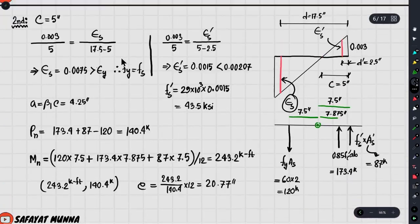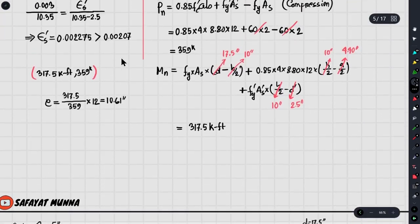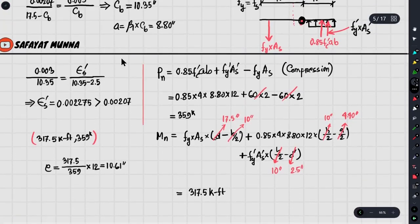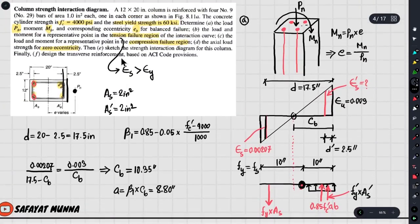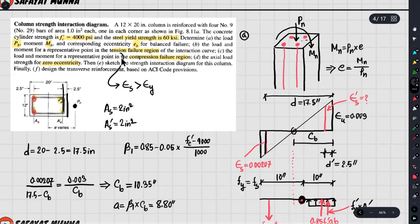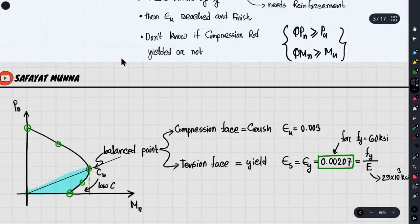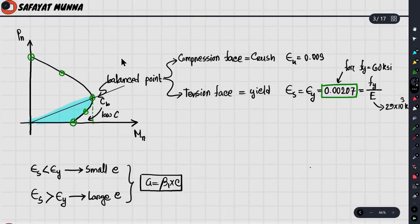In the last video, we had 3 points in our interaction diagram. Now we have 2 points in our interaction diagram. What are the 2 points? One point is eta, which is pure compression, and the other point is pure bending.